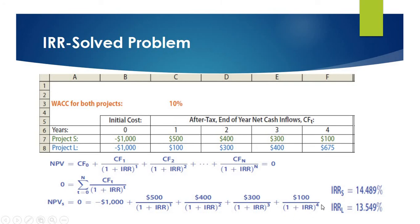The last one is 1 plus IRR to the power 4. If we use 14.489% discount rate, the NPV of Project S will be zero. If we use this discount rate, that means 14.489%, the NPV of Project S will be zero.